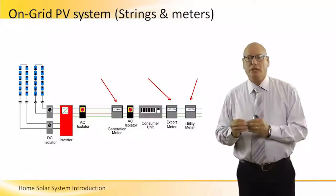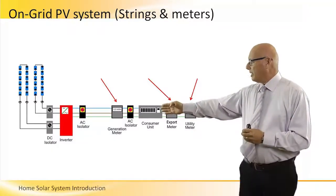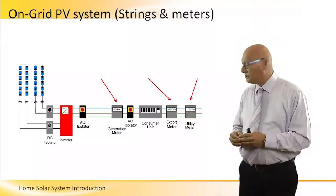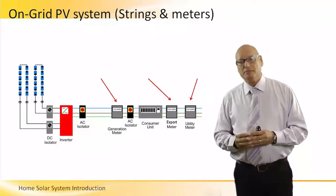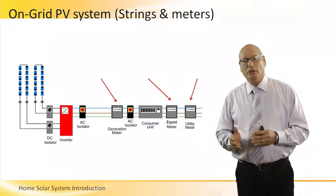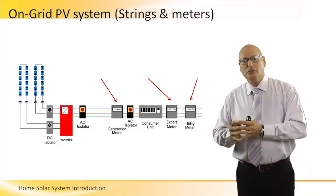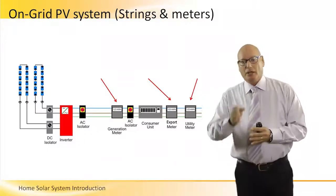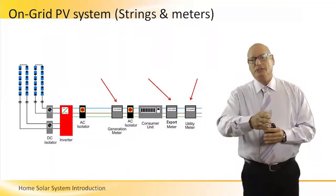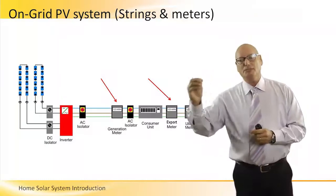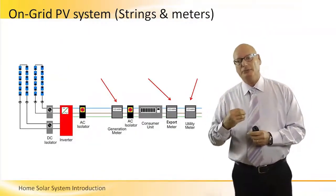This meter displays how much the PV system actually generates. After the generation meter there is another isolator for safety precautions, then it goes to the consumer unit, the export meter, and the utility meter. The export meter minus the generation meter — B minus A equals C — is exactly what is being exported to the grid, for which I receive money back from the utility company based on the feed-in tariff.